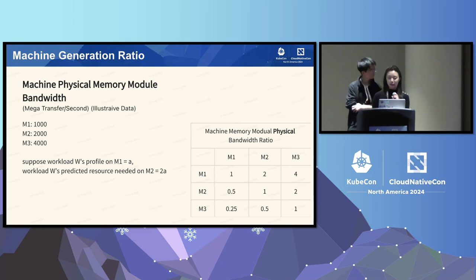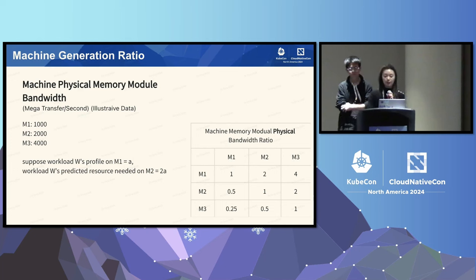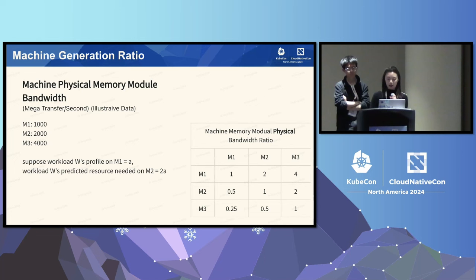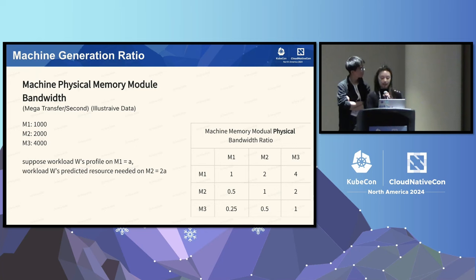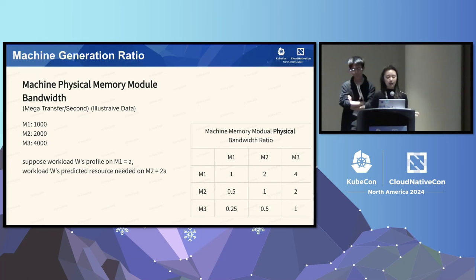Take an example — and these are all illustrative data. Say we have three kinds of machines, M1, M2, and M3, each with physical memory module bandwidth of 1K, 2K, and 4K. We could have a metric where M2 over M1 is 2. So if historical data shows workload W's profile running on M1 is A per core, then we can estimate the same workload W needs 2A per core running on M2. If a workload has historical data, we directly use that. Otherwise, if a workload has values for both M1 and M2, we calculate M3 based on M1 and M2 and take the max.